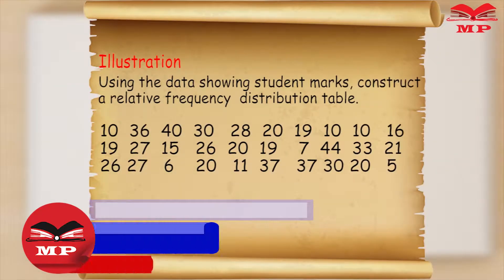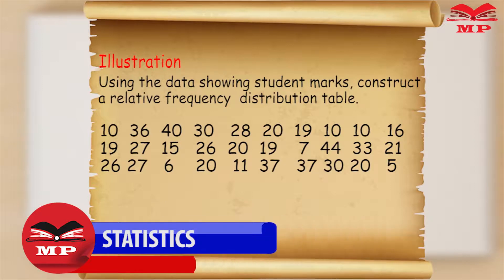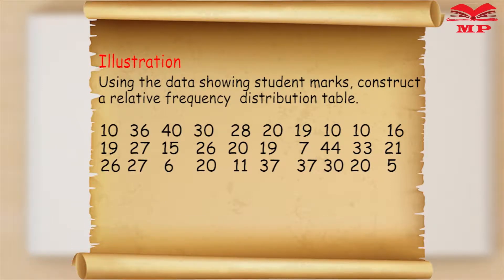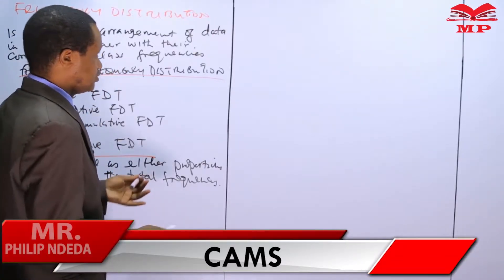Using the data showing student marks, construct a relative frequency distribution table. Remember our last illustration where we had 30 students in our test and we had the marks — we are going to use that illustration to construct a relative frequency distribution table. In that table, remember we had classes.